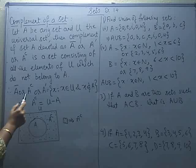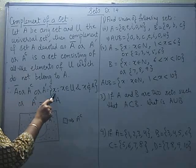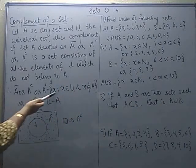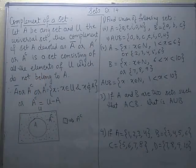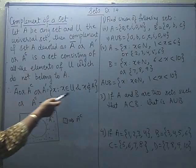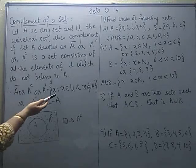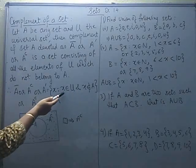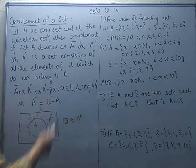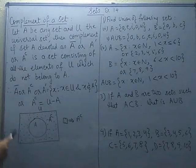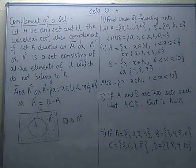In set builder form, A complement will contain elements X such that X belongs to U and X does not belong to A. If you try to relate this definition with the difference of two sets, you will find it resembles it. When we say A minus B, it means the element belongs to A but does not belong to B. So here the same thing is happening — X is in U and not in A. Therefore, A complement can be written as U minus A: from the entire universal set, you remove the elements of A, and the leftover is A complement.